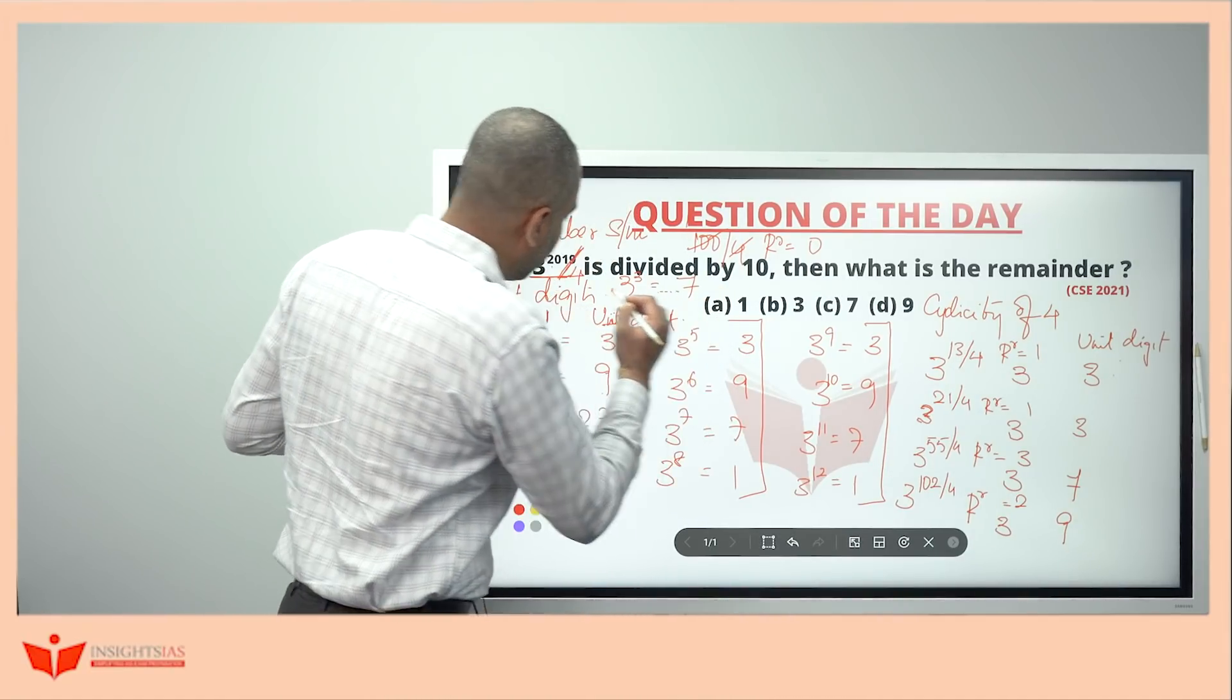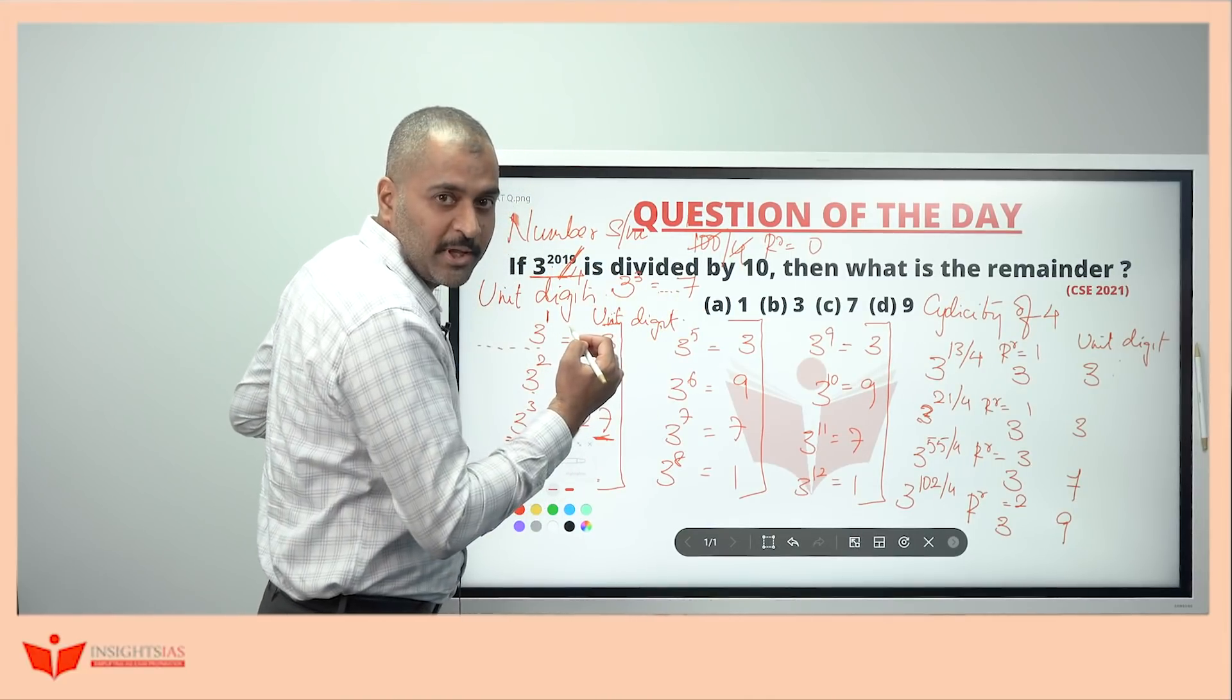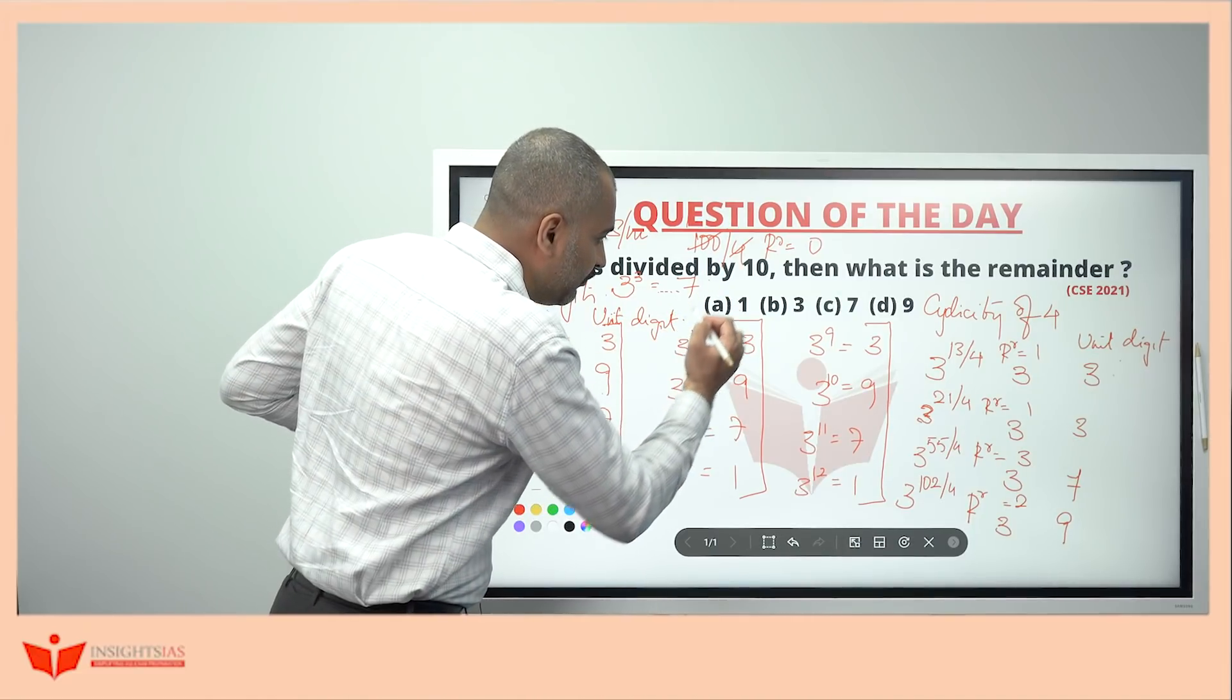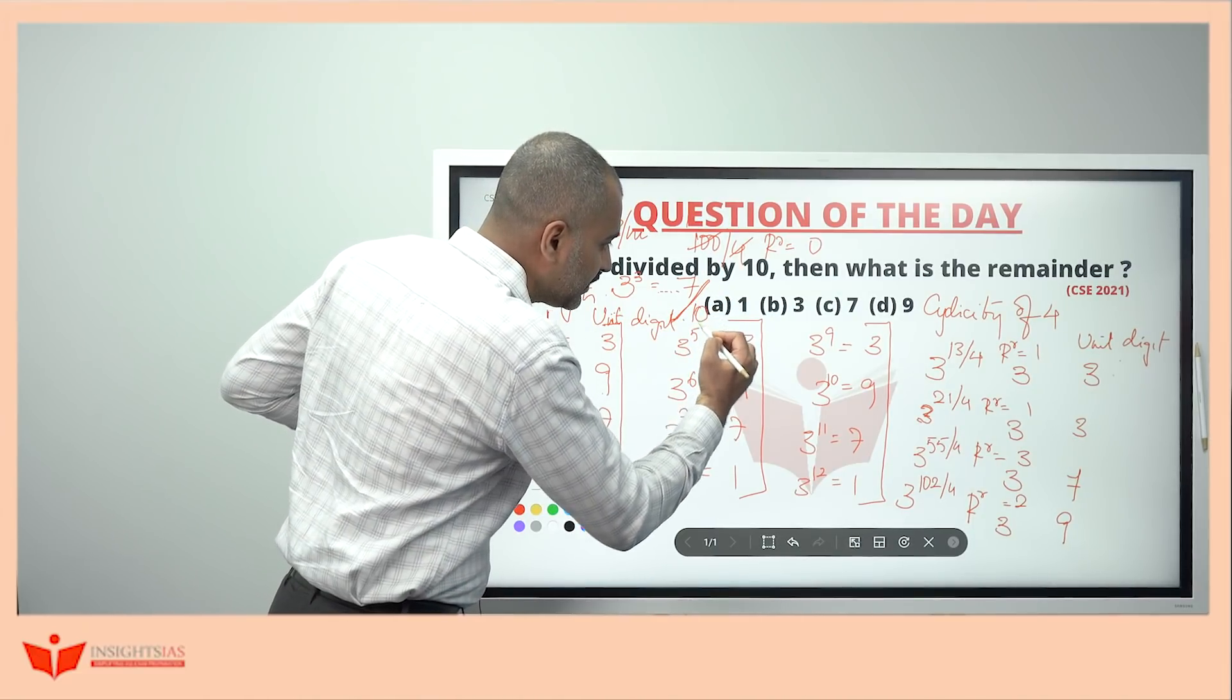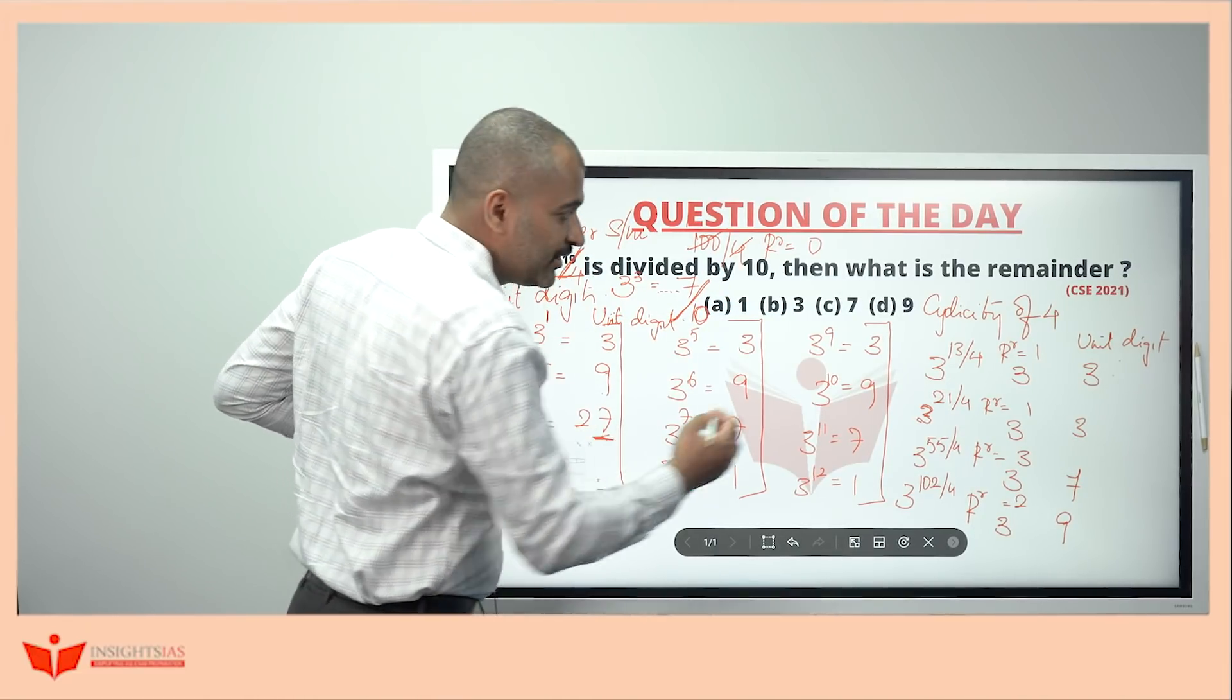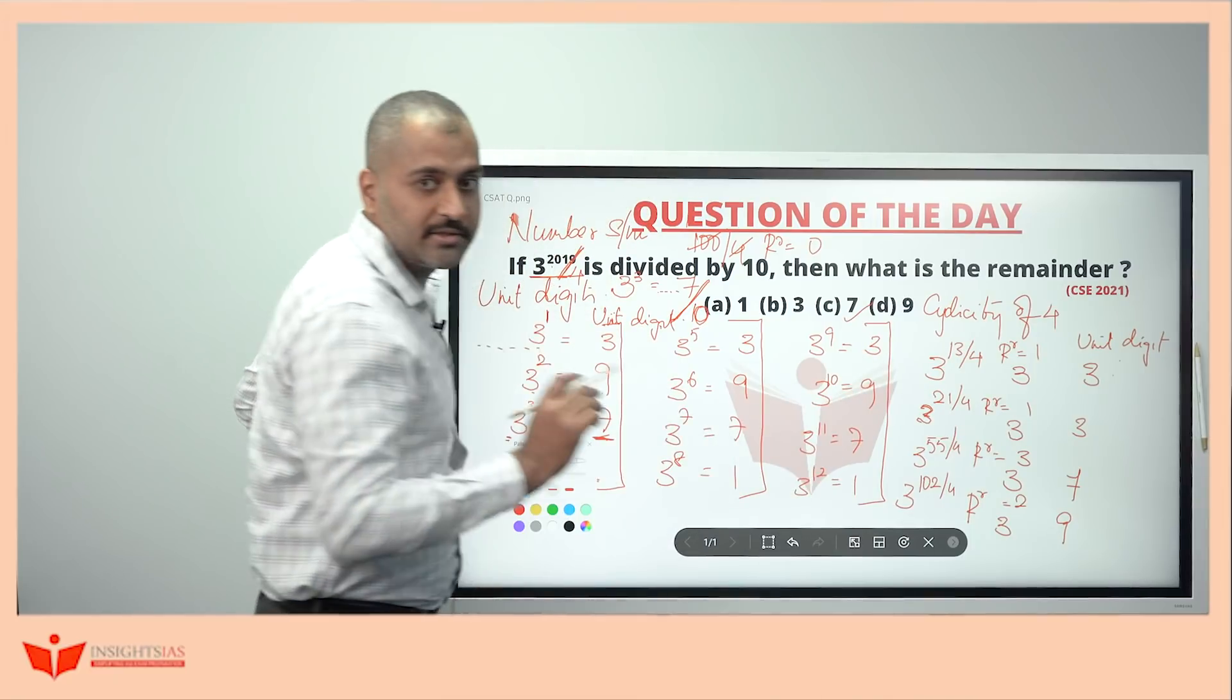So, this whole number 3 power 2019 ends with 7. Anything which ends with 7, when you try to divide this by 10, what is the remainder? Anybody can say this one.